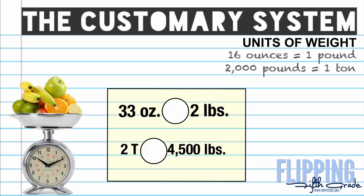When comparing two different units, just like with fractions, you want to make sure they look the same before you compare. We have 33 ounces versus 2 pounds. I'll convert both to ounces by multiplying 2 times 16 to get 32 ounces, so 33 ounces is greater than 32 ounces. Similarly with tons versus pounds, 2 tons times 2,000 gives 4,000 pounds, which is less than 4,500 pounds. First convert them, then compare.